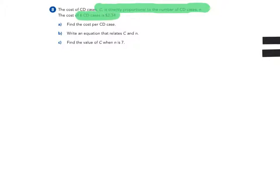Part A says find the cost per CD case. Let's look at what we know. We know that C is directly proportional to N. That means this relationship here is what we call a direct proportion.